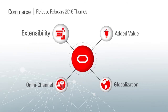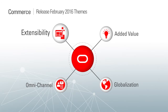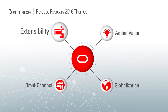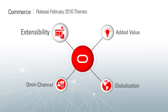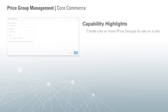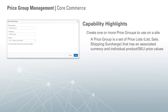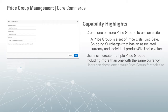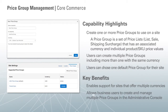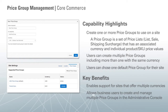First, let's talk about extensibility enhancements and updates to the platform and APIs. One platform enhancement is around price group management. This allows merchants to create one or more price groups to use on a site, and is important for sites that offer multiple currencies.